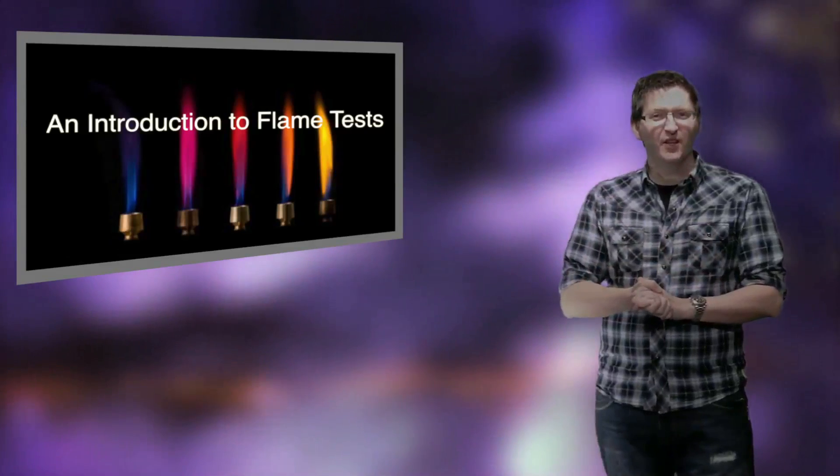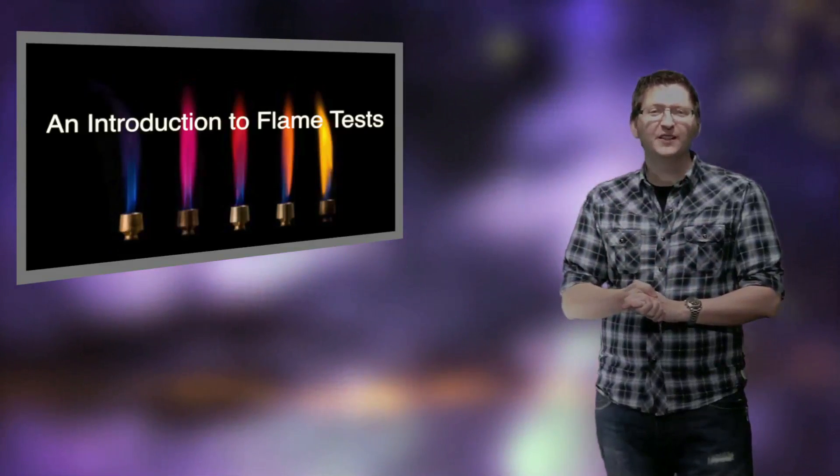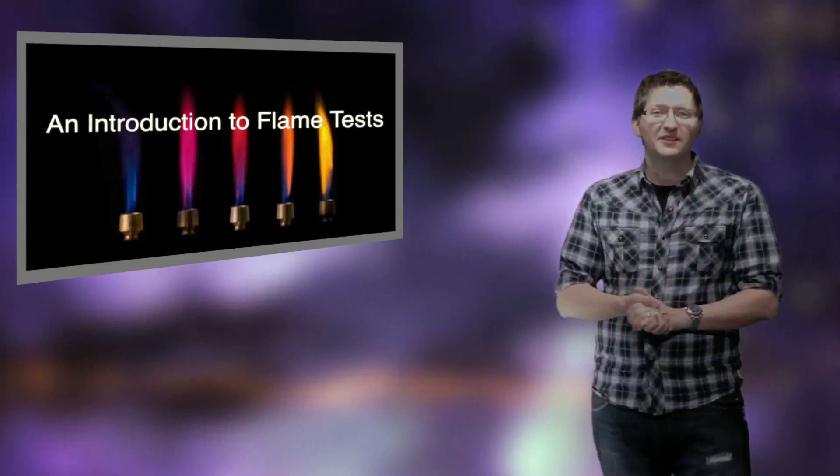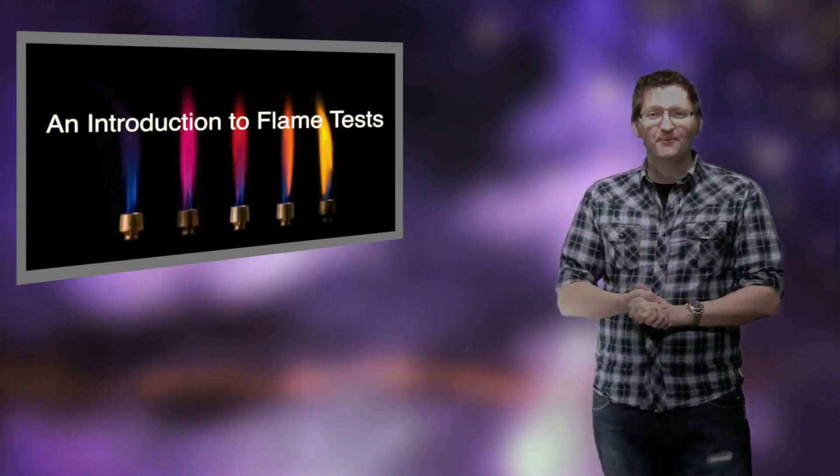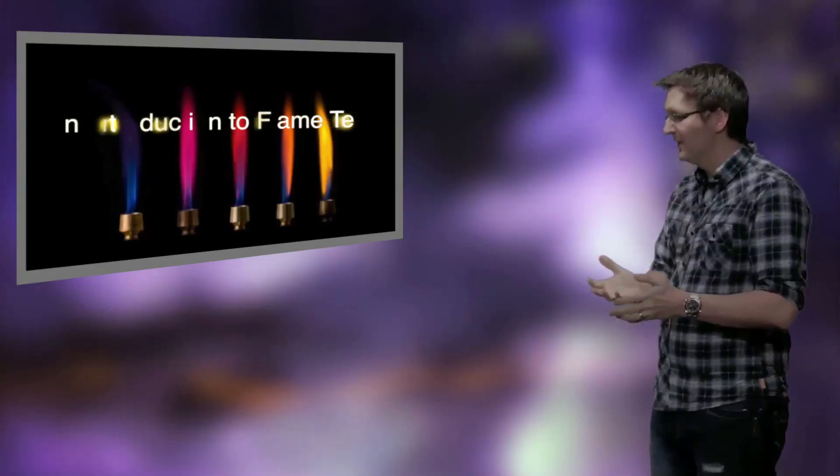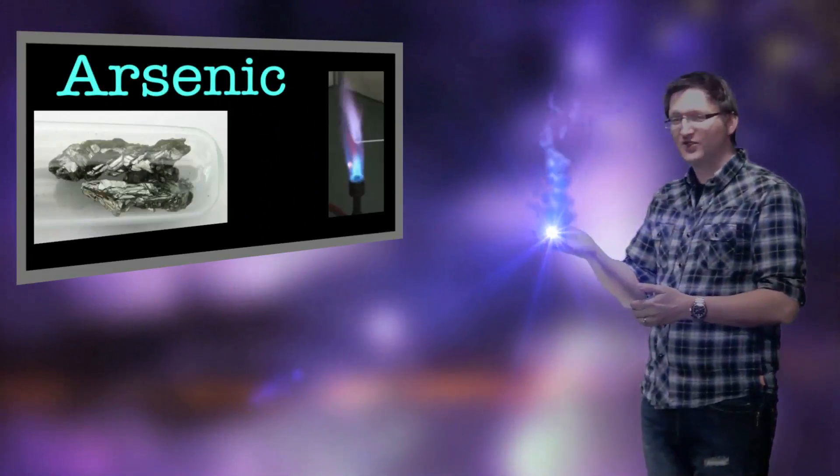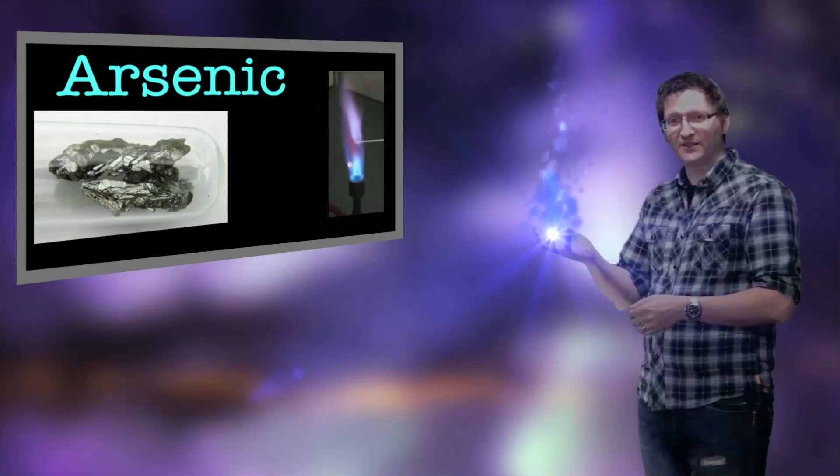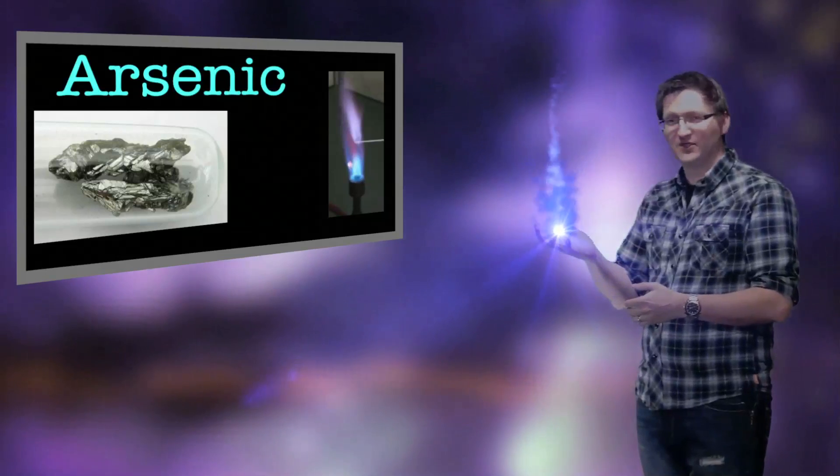I'm going to choose 25 different elements to look at and I'll go through them alphabetically just to make things easier. So let's have a look at the first one. The first one is arsenic. Arsenic burns with a bright blue flame as you can see here.